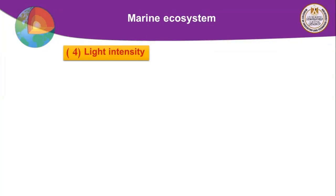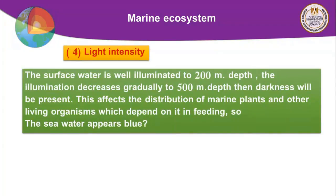The fourth factor is light intensity. In surface water, light is well distributed down to 200 meters depth. From 200 to 500 meters, light intensity decreases gradually. After 500 meters, there is no light — complete darkness. This affects the distribution of marine plants and other living organisms that depend on light for feeding.